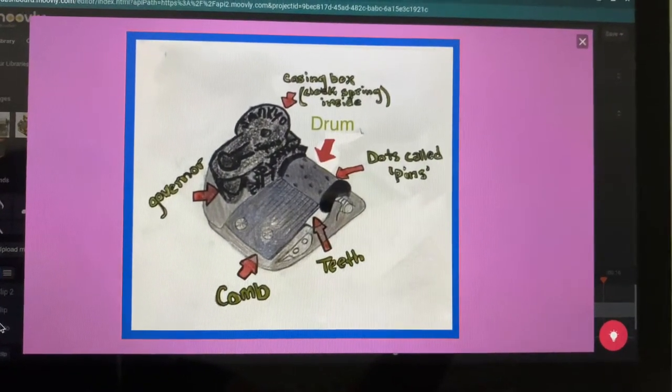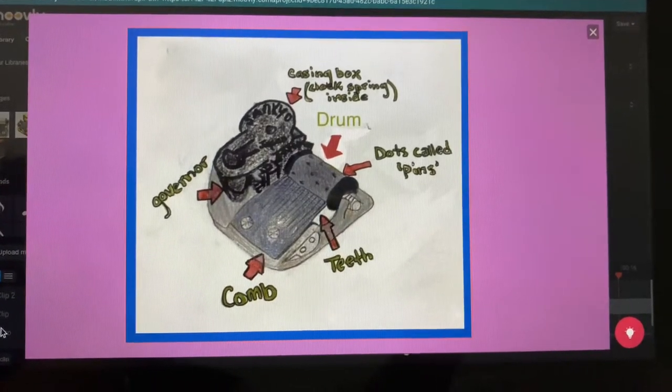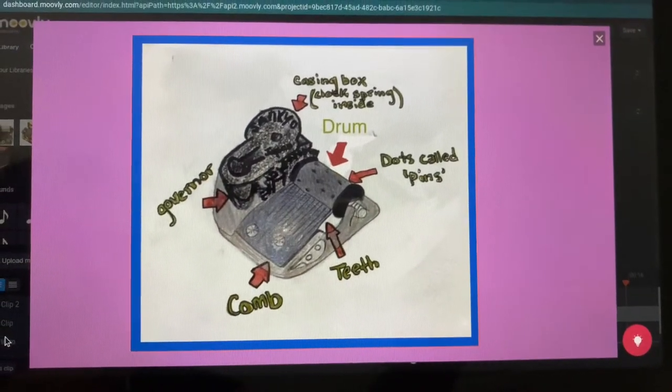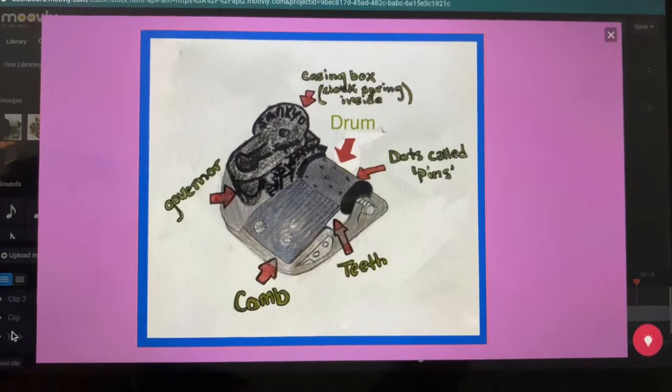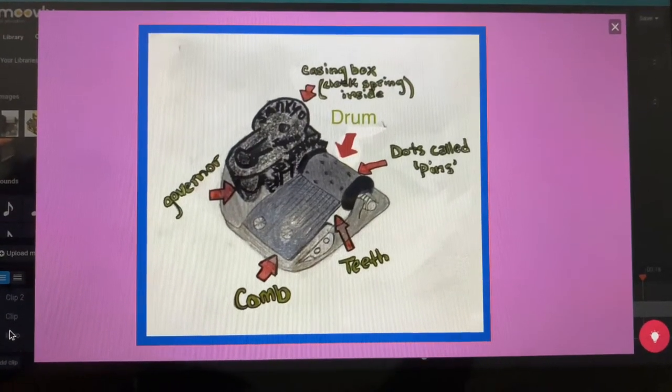The music box is a mechanical musical instrument that uses kinetic energy and turns it into sound energy. To understand how a music box converts kinetic energy into sound energy, first we need to understand a few components of the music box.